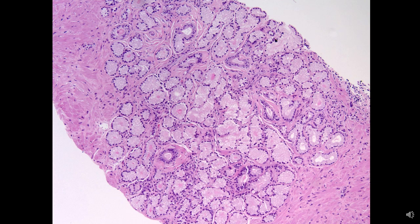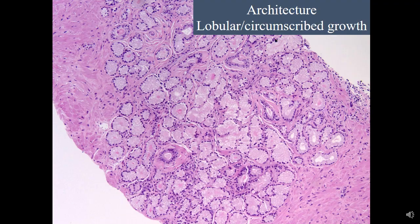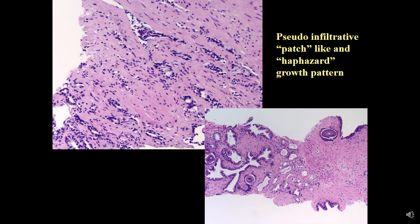Pay attention to this architecture — it is a very tightly circumscribed proliferation. This is usually a mimicker of foamy gland prostate adenocarcinoma, and cancer typically never presents with such a tightly circumscribed proliferation. This rule applies for most benign conditions, but be aware that atrophy can present with a patch-like or pseudo-infiltrative growth pattern, and partial atrophy and some other benign mimics can present with a haphazard or disorganized growth pattern. However, these patterns are not the infiltrative pattern characteristic of prostate cancer.